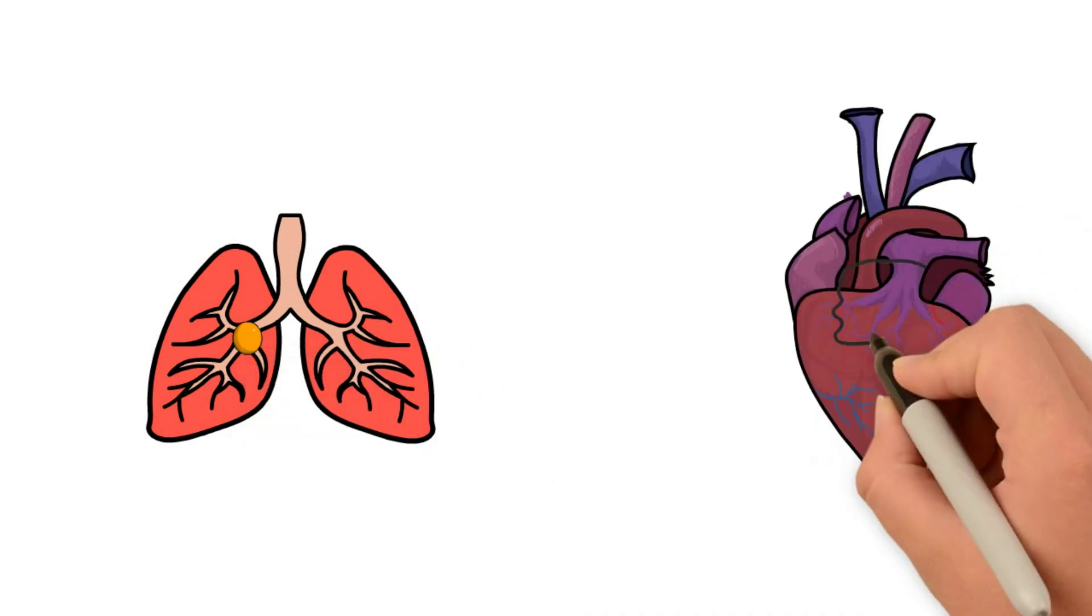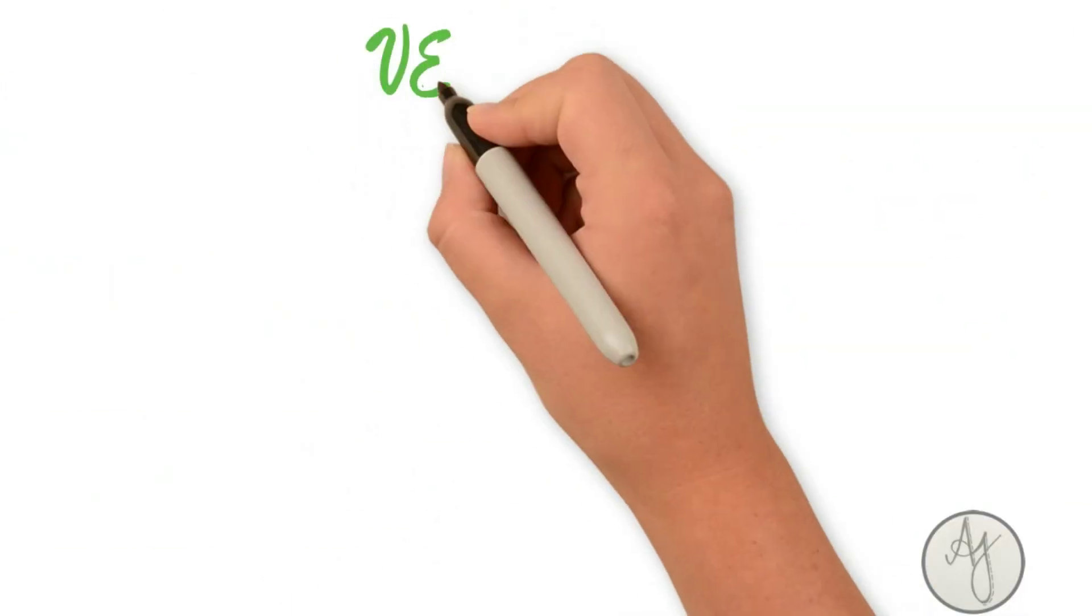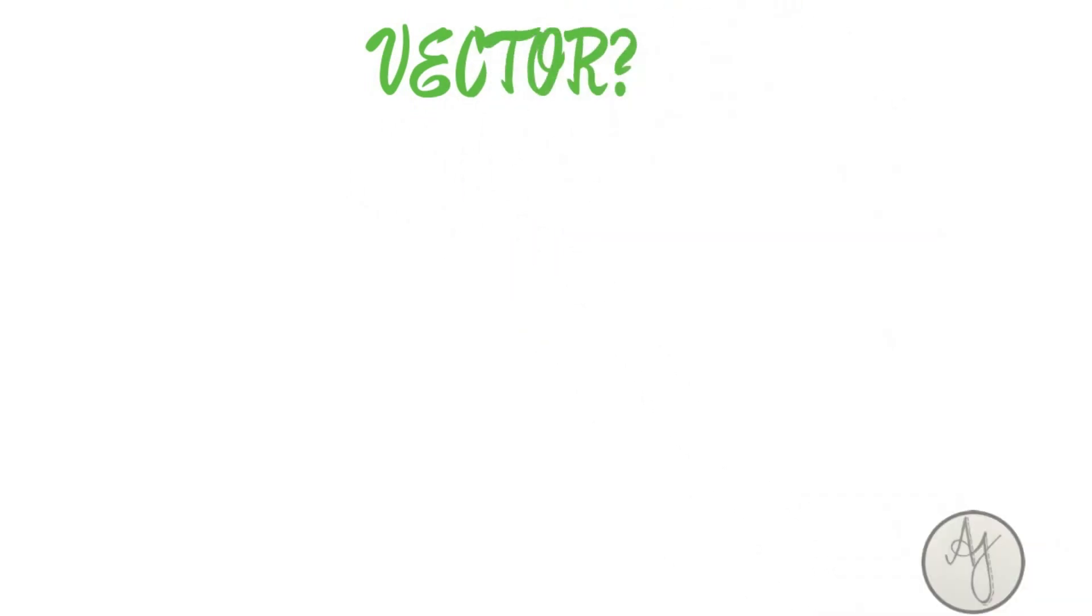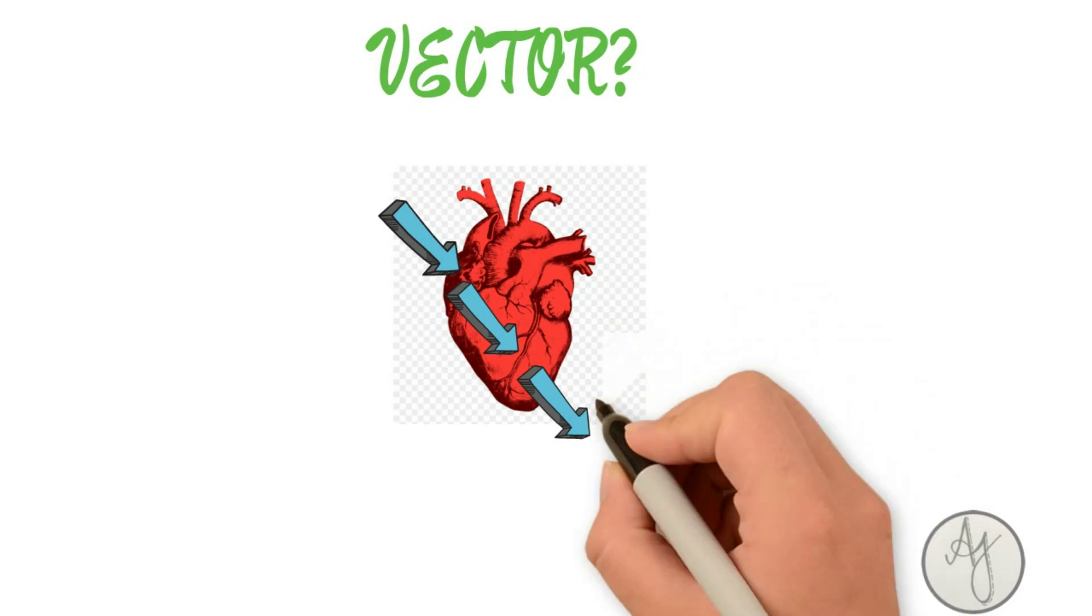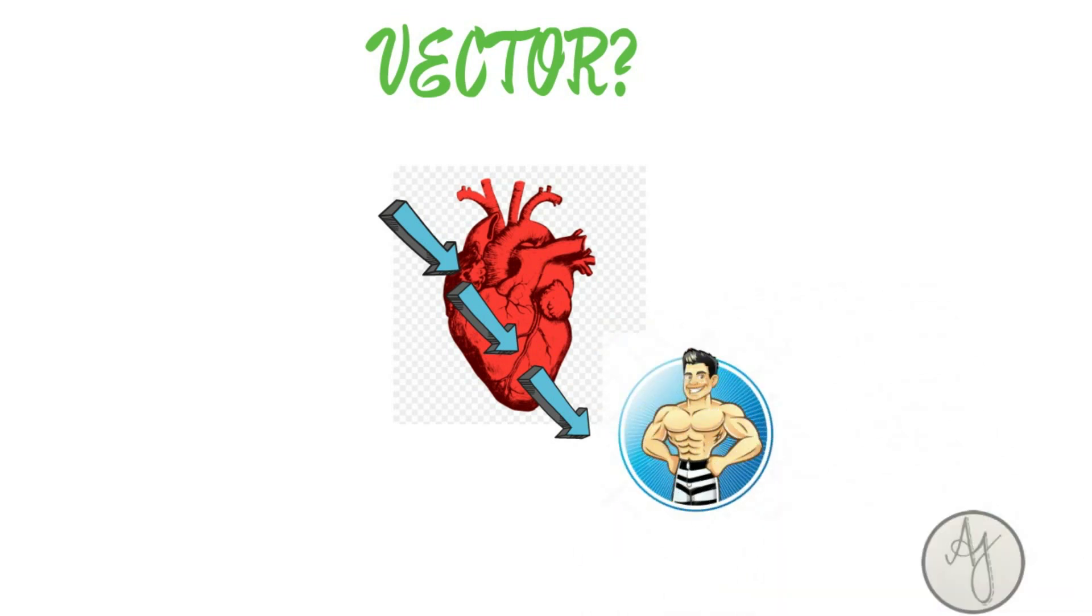So before diving into axis, let's recall what a vector is. A vector is this imaginary line which is going towards the position of the heart that has the maximum muscle mass. This is normally, in a normally functioning heart, towards the left ventricle.